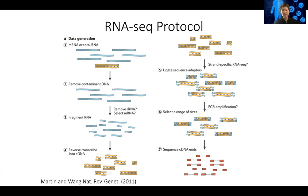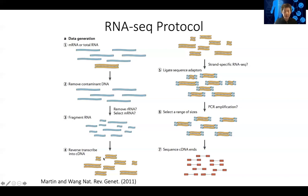Currently, with high-throughput sequencing, we can't sequence as long. Therefore, the RNA needs to be fragmented into shorter fragments. Then, using different primers, we can use reverse transcription to generate cDNA of those little RNA fragments. Each fragment could be maybe a few hundred base pairs long, and reverse transcriptase will generate double-stranded DNA.